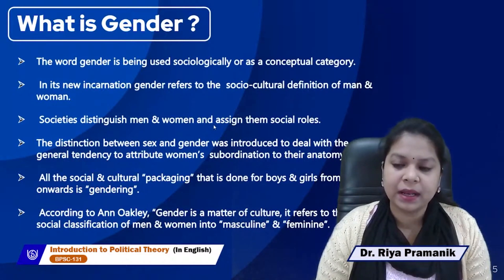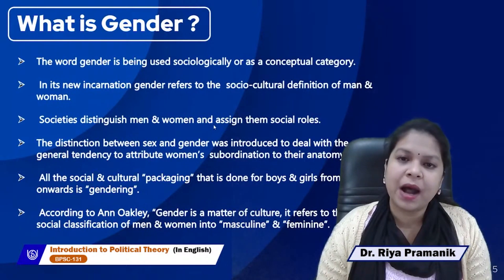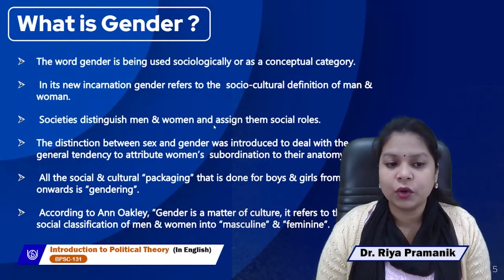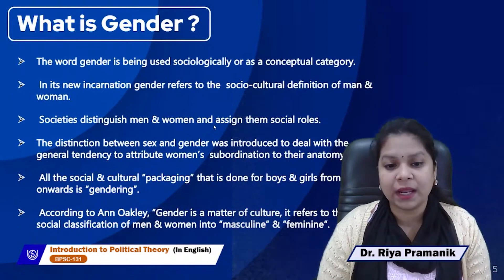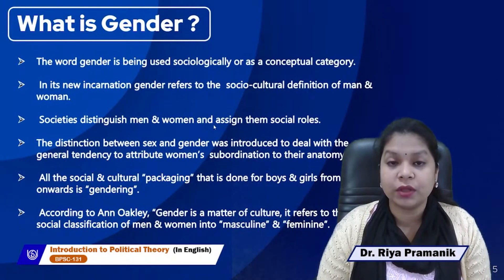Societies distinguish men and women and assign them social roles. For example, men are assigned the role of going out and earning money for their families, whereas women are considered part of the household — taking care of household chores, children, the husband, and the family. The distinction between sex and gender was introduced to deal with the tendency to attribute women's subordination to their anatomy.